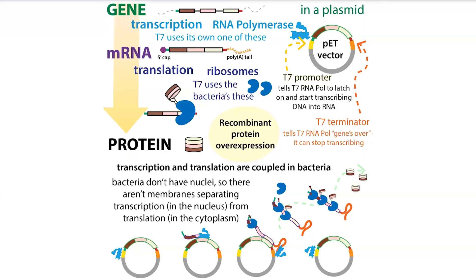The basic idea of inducible expression using the lac operon system is that you stick the genetic instructions for making a protein of interest in front of the regulatory region that bacteria use to decide when to make an enzyme that breaks down lactose — this protein that takes the sugar lactose and breaks it down for energy use. In this way, when the cells think there's lactose around, they're going to start making what they think is the enzyme to break down lactose, but instead they're actually going to be making your protein.